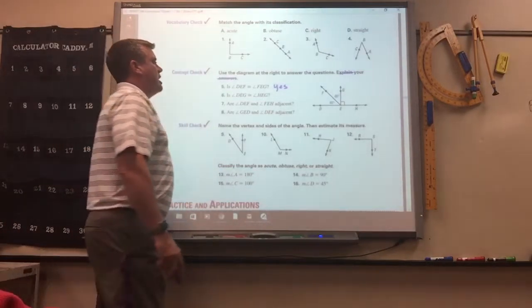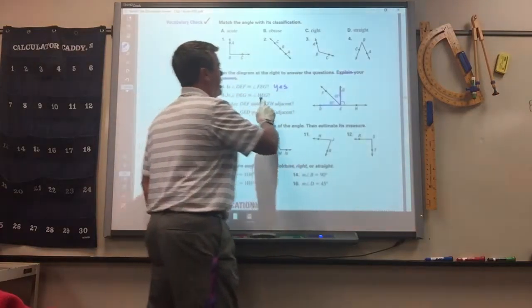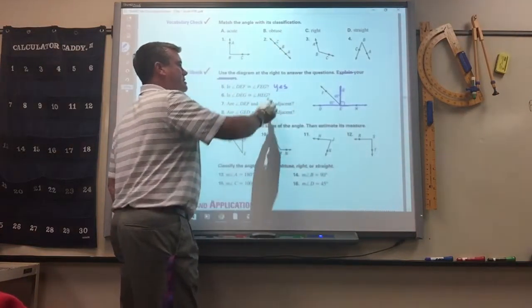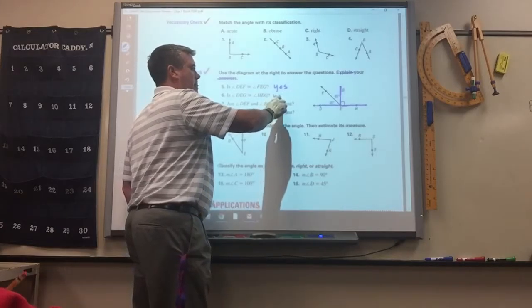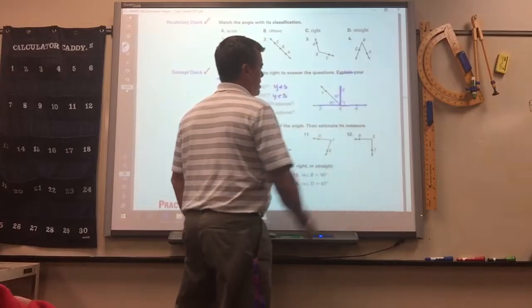Six is angle DEG congruent to angle HEG. Yes, because this is 90, and those two together form a 90.